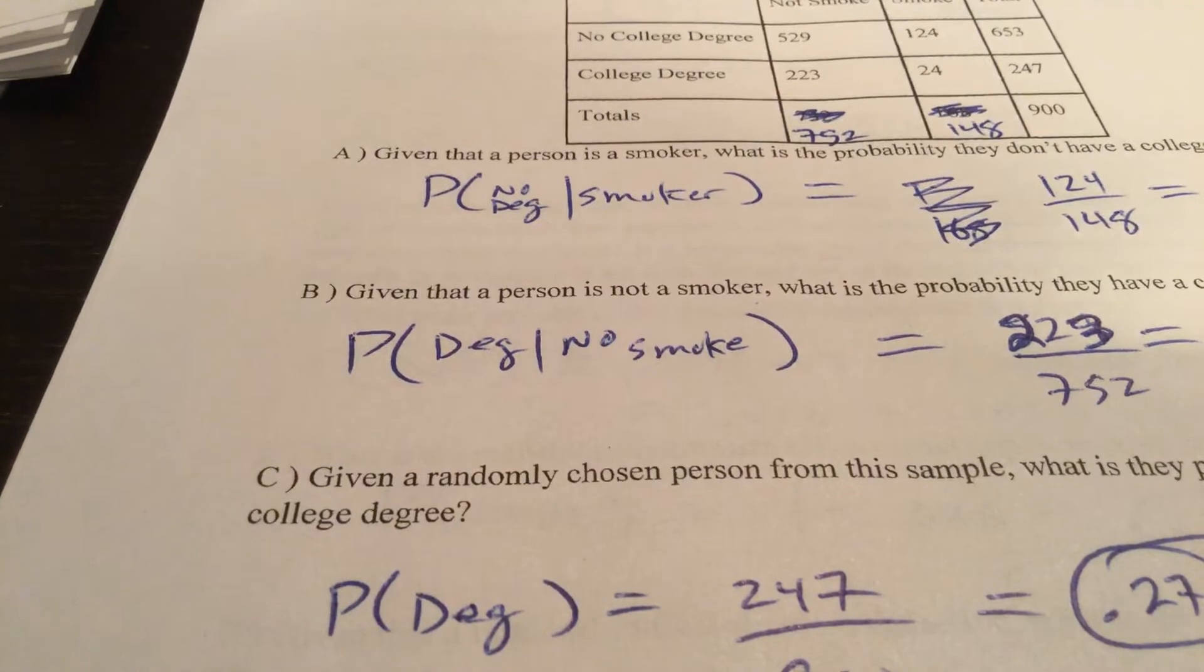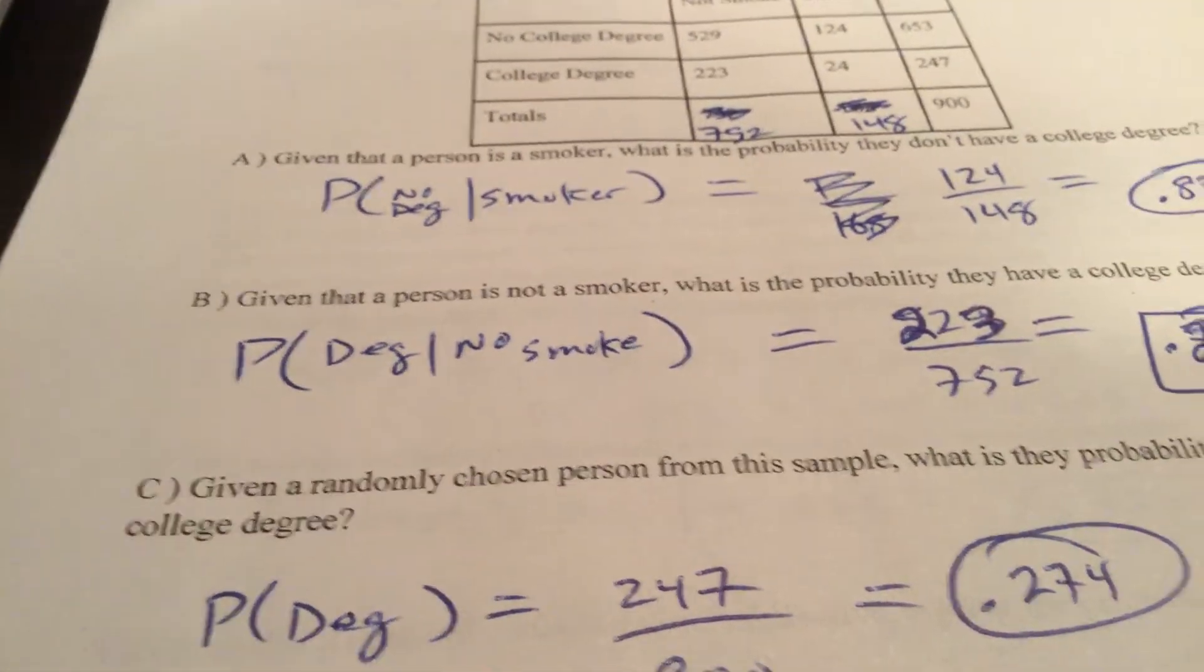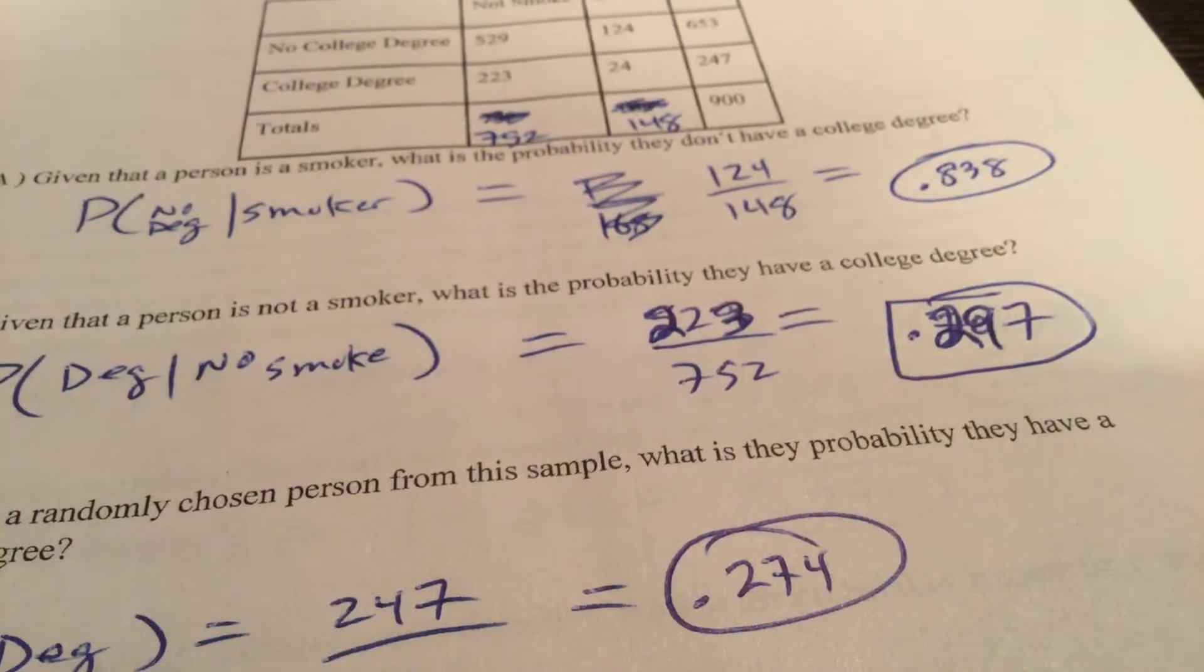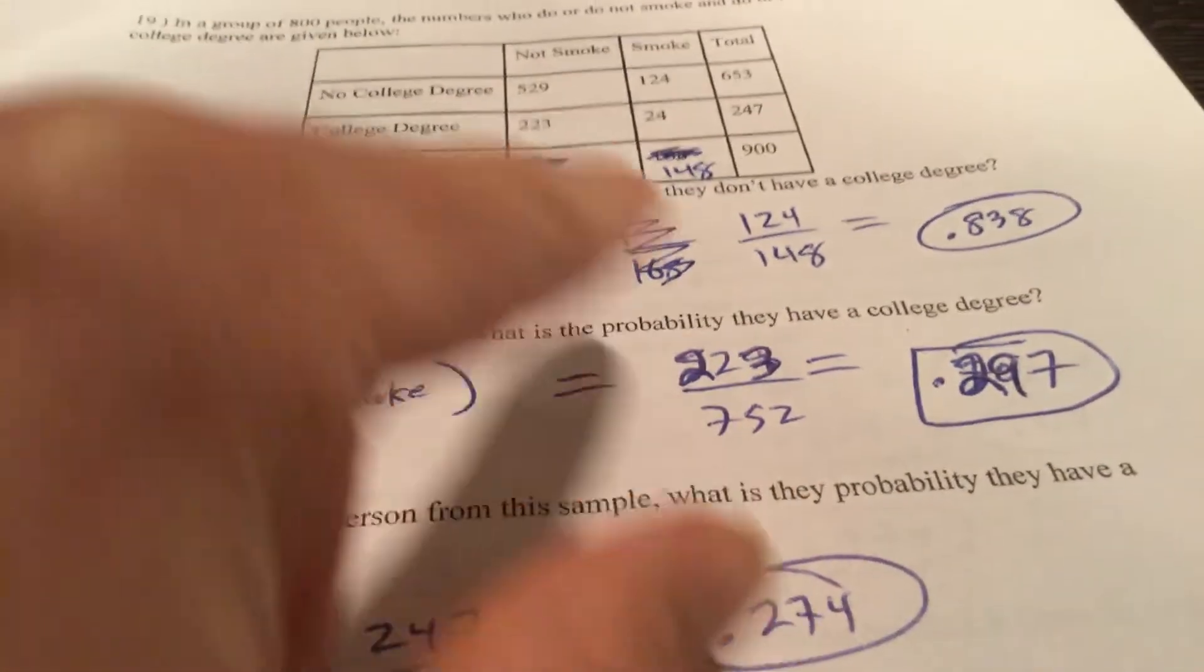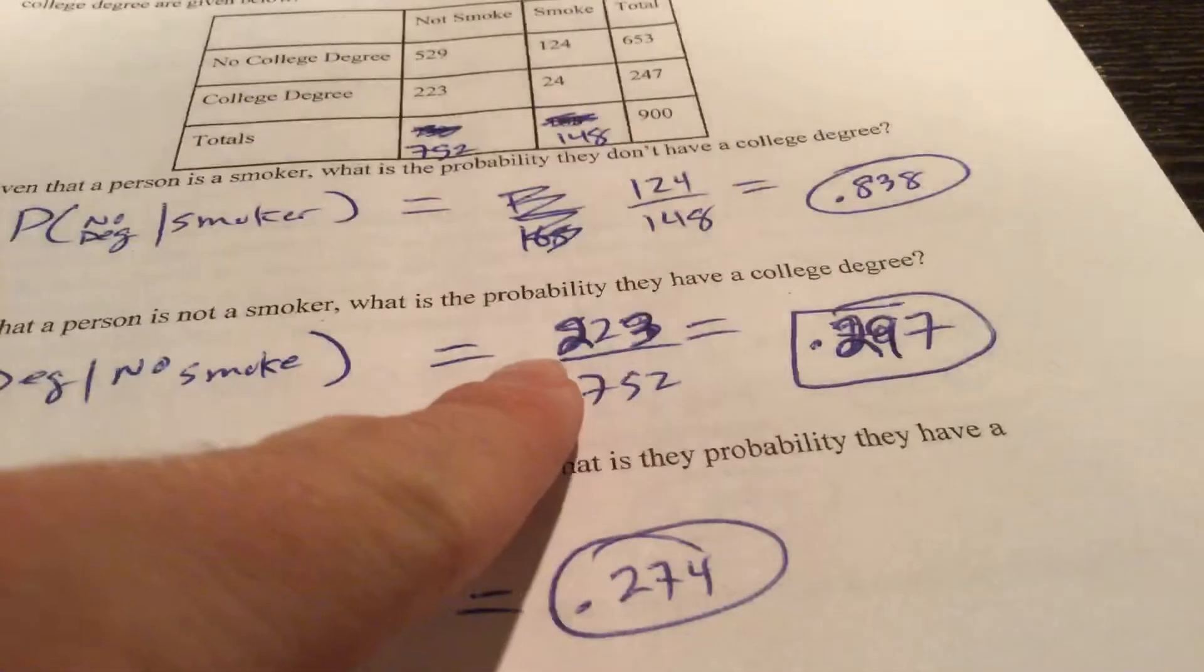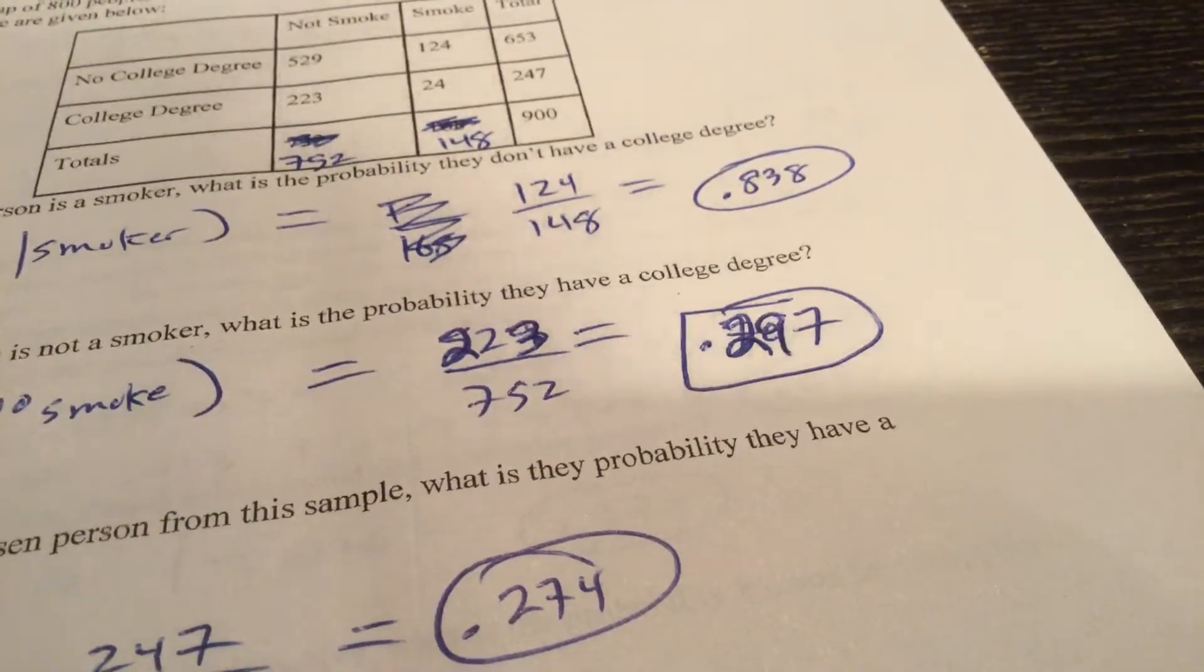B, given that they are not a smoker, what's the probability they have a college degree? So probability degree given no smoke. So given that they don't smoke, 752 is the denominator. Those with a college degree is the numerator. I made a mistake before. That's 0.297.